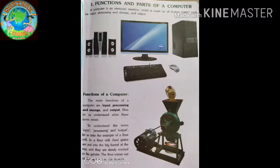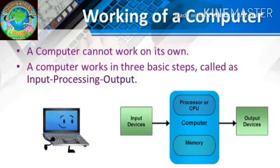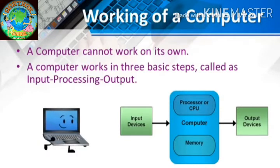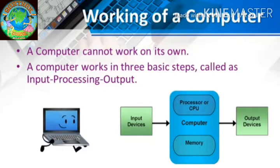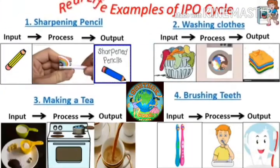A computer cannot work on its own because it is a machine. As we know, a computer works on three basic steps called input, processing, and output. Input devices give input to the computer. Here are some real-time examples of the IPO cycle.